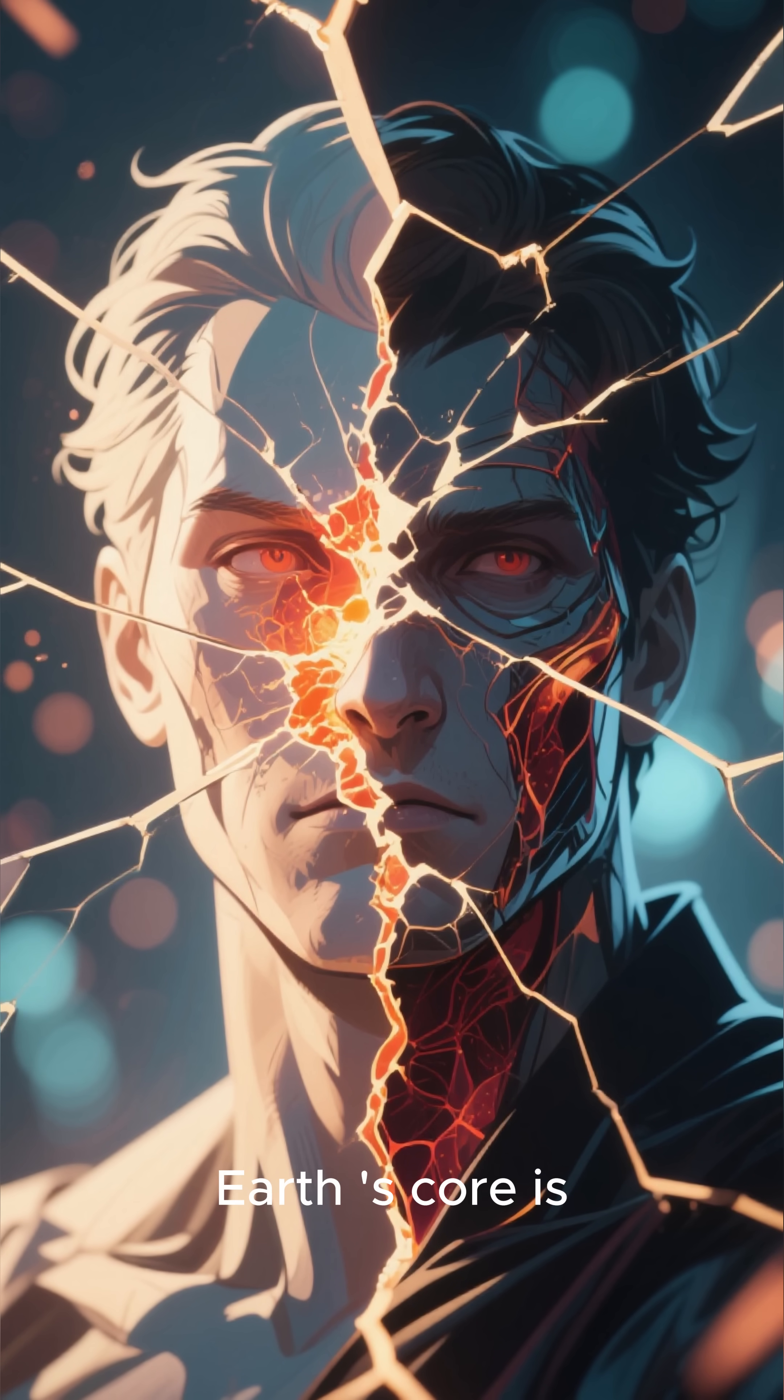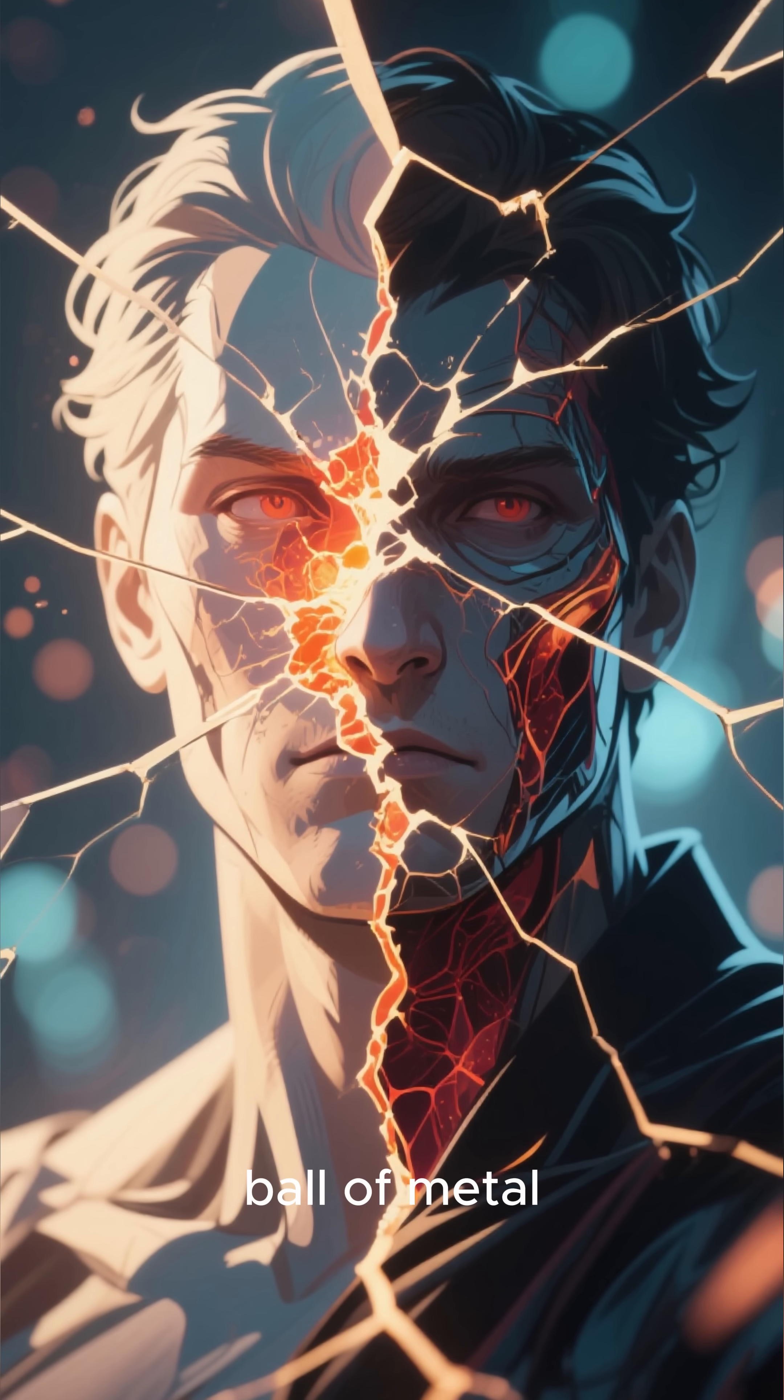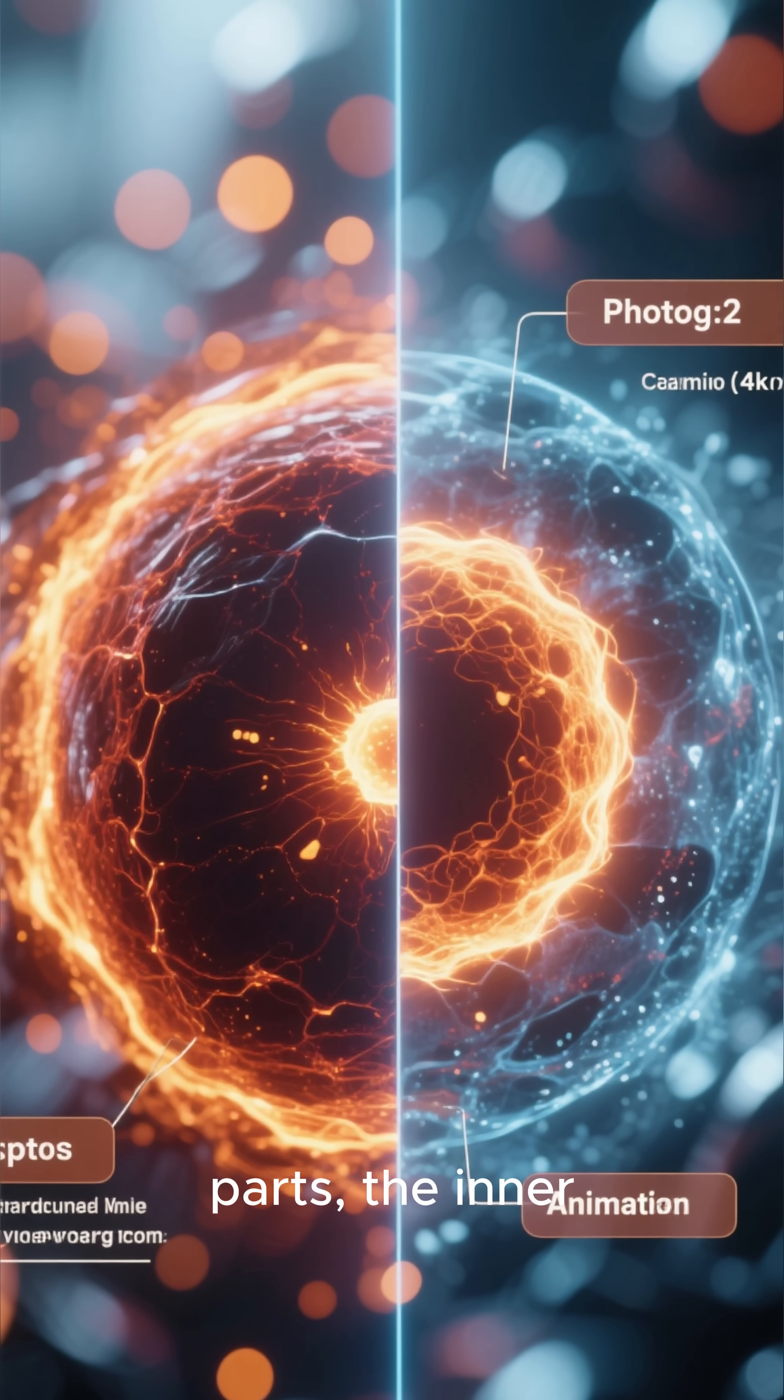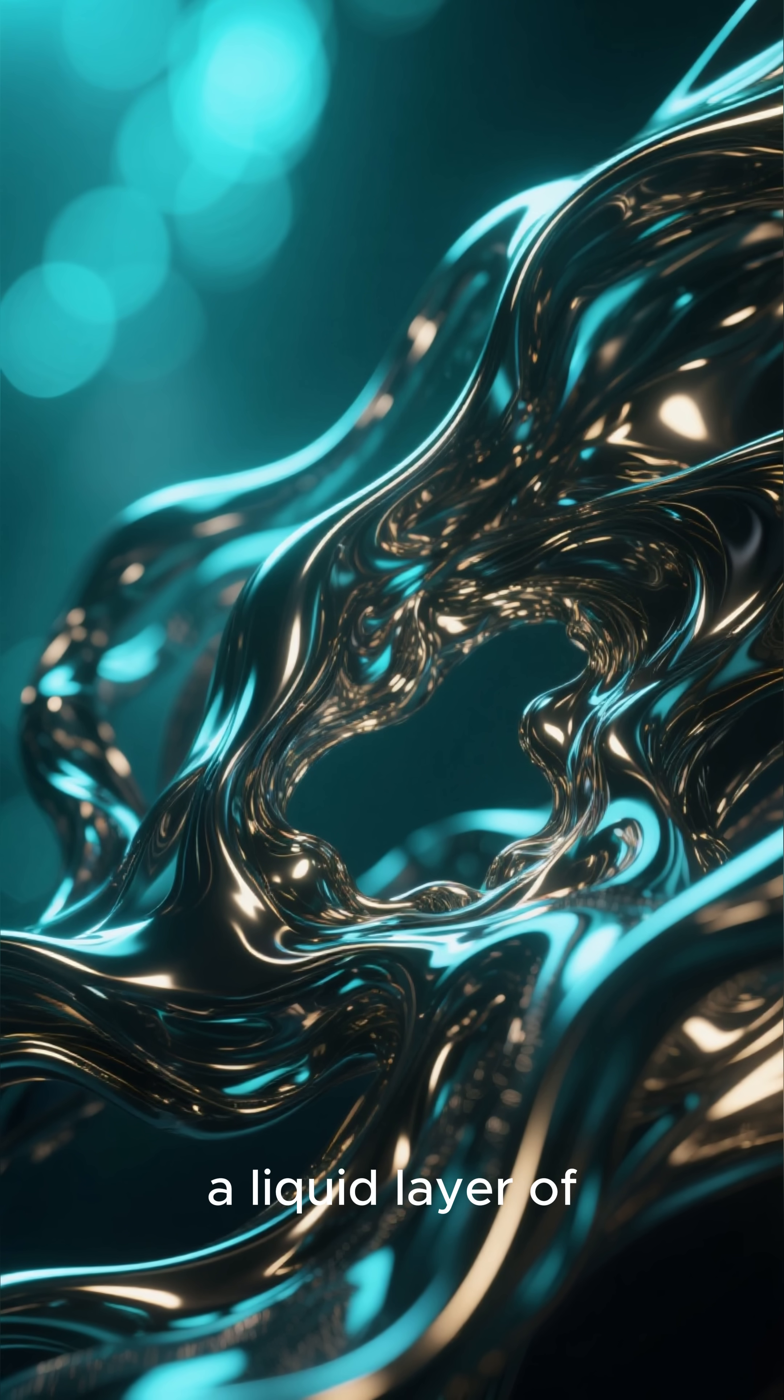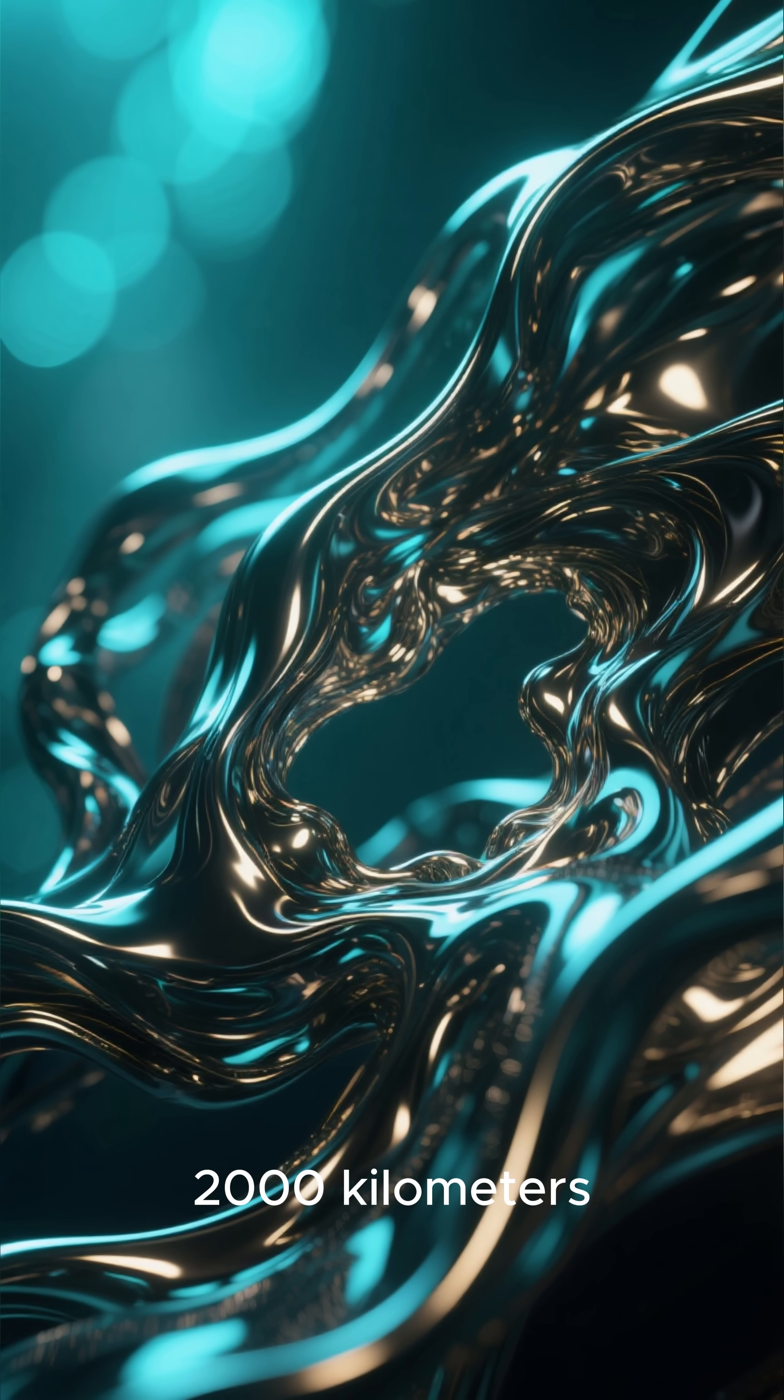You might be surprised to learn that the Earth's core is not just a solid ball of metal. It's actually divided into two parts, the inner core and the outer core. The outer core is a liquid layer of iron and nickel that's around 2,000 kilometers thick.